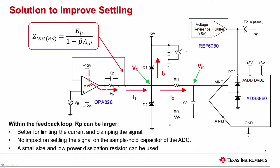Additionally, under fault conditions, the resistor will still limit the total current that the amplifier can drive. The capacitor CP acts as an AC short across the protection resistor at higher frequencies to minimize the impact of the resistor as AOL rolls off with frequency.